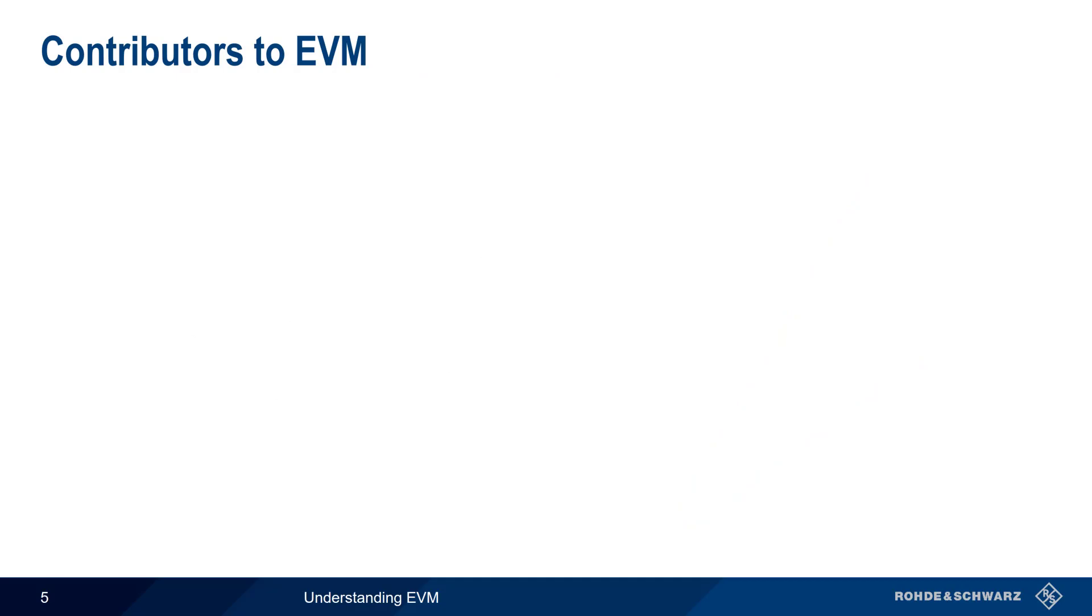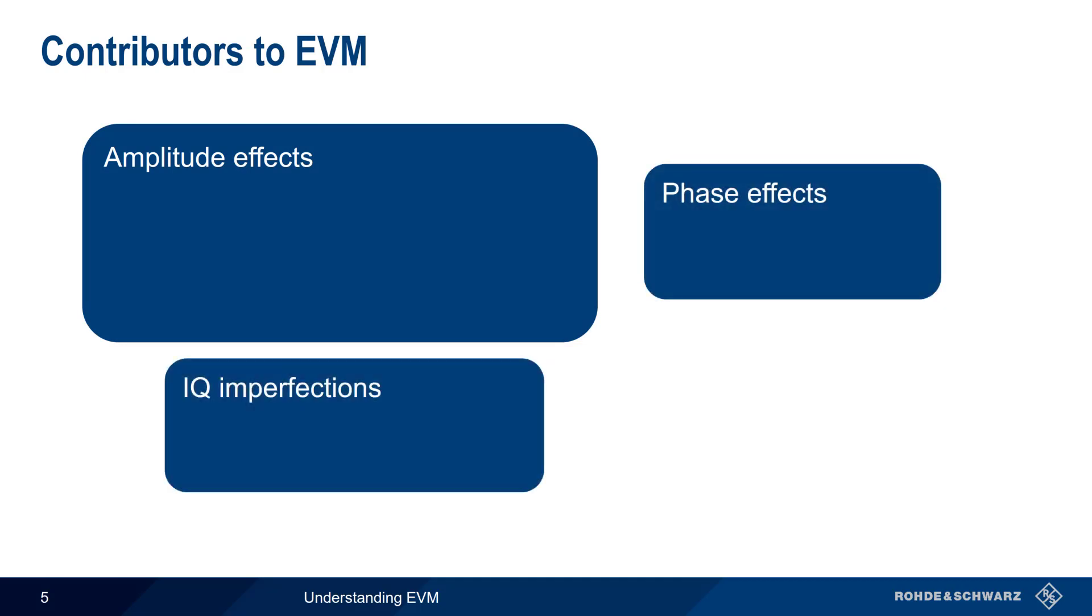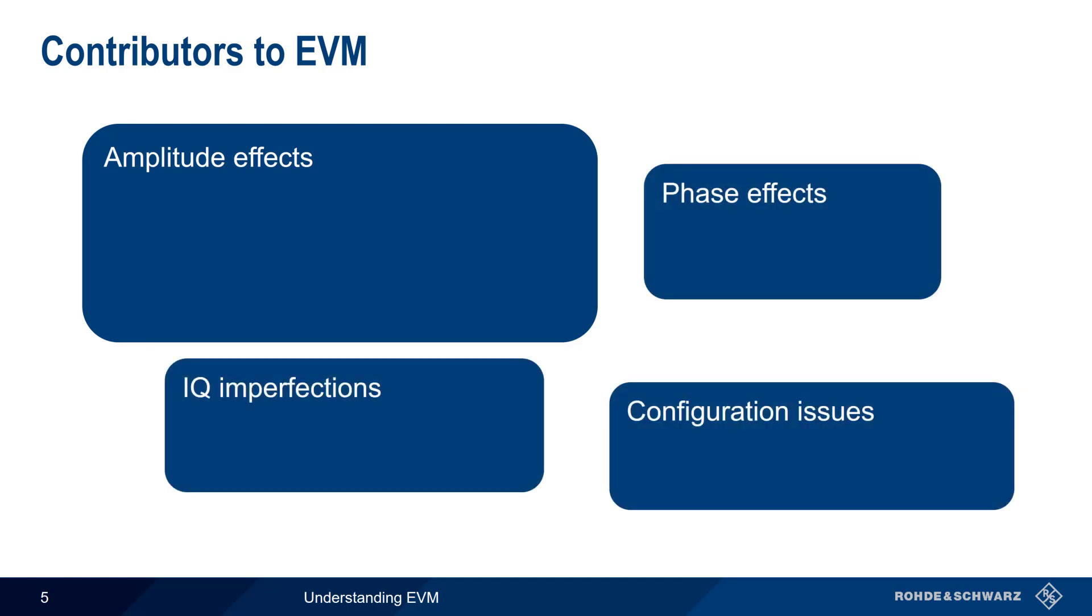The sources or causes of increased EVM fall into four main categories: amplitude effects, phase effects, IQ imperfections, and configuration issues.